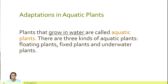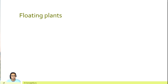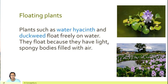Now let's talk about the adaptations in aquatic plants. Plants that grow in water are called aquatic plants. There are three kinds of aquatic plants: floating plants, fixed plants, and underwater plants. Floating plants such as water hyacinth and duckweed float freely on water. They float because they have light, spongy bodies filled with air.